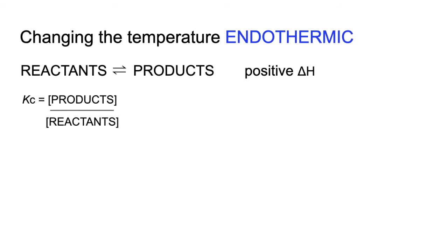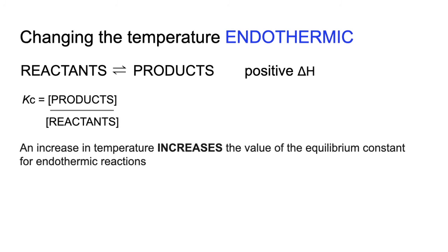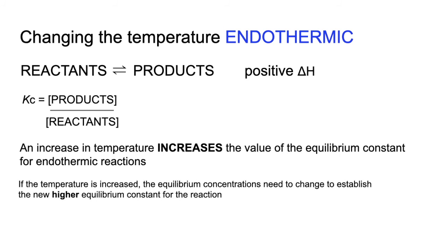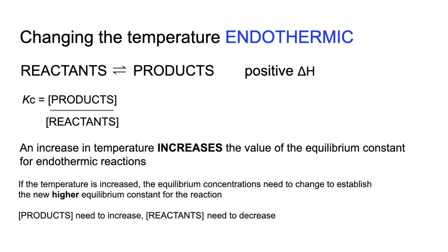For an endothermic reaction (positive ΔH), if you increase the temperature, the Kc value increases. The equilibrium must shift to achieve this higher Kc value. To increase Kc, the product concentration needs to rise and the reactant concentration needs to fall — so the equilibrium shifts to the right.